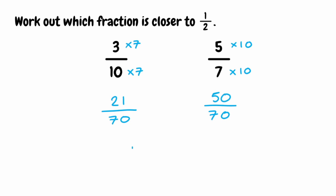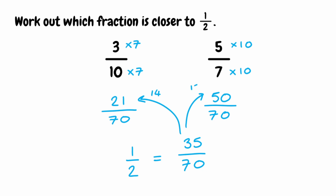Now we want to see which fraction is closest to one half, keeping the denominator at 70. The equivalent fraction for one half over 70 is 35 over 70. Comparing numerators, 21 is 14 away from 35, and 50 is 15 away from 35. So the nearest equivalent fraction is 21 over 70, and our final answer using the original fraction is 3 tenths.